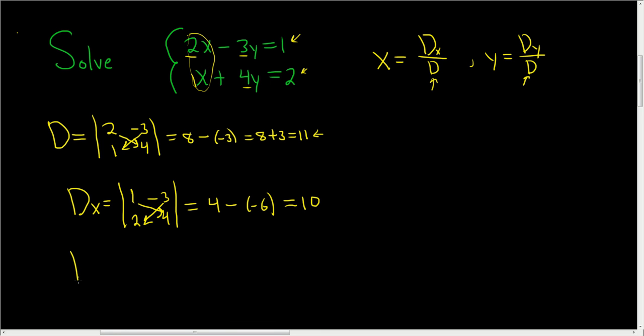Finally, we'll compute big D sub Y. So in this case, you keep the X's, so 2 and 1, and you replace the Y's. So you replace these guys with 1 and 2. So in this case, we get 2 times 2, which is 4, minus 1 times 1, which is 1. So 4 minus 1 is 3.